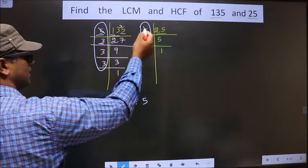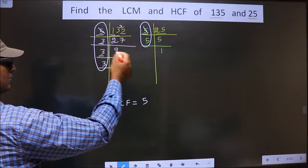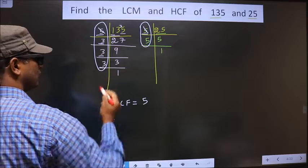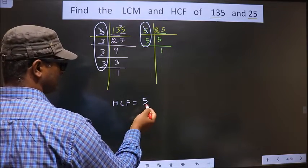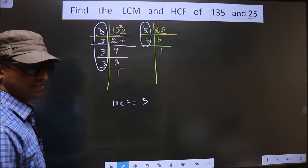Next number is 3. Do we have 3 here? No. Next number is 3. Do we have 3 here? No. Next number is 3. Do we have 3 here? No. No more numbers are left. Only one number 5 is present in these two places. So, 5 is our HCF.